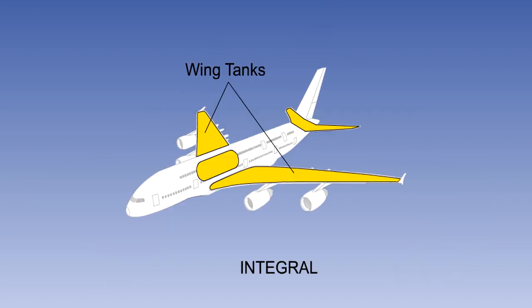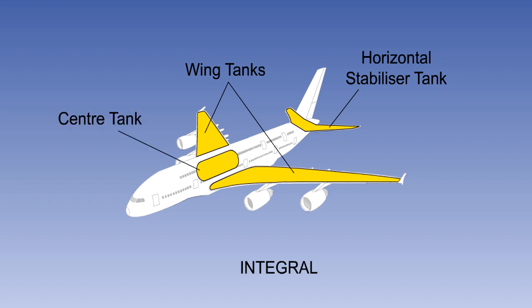Integral tanks are made by sealing during manufacture the insides of the wings and, depending on type, the horizontal stabilizer and the center section torsion box between the wings to provide large volume fuel storage. The advantage of the integral type tank is that there is little extra weight added to the aircraft, as the tank is formed from the structure already required. All modern large passenger aircraft will have this type of tank.